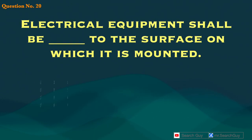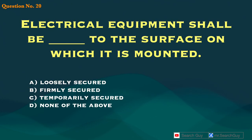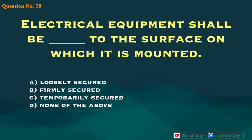Question 20. Electrical equipment shall be blank to the surface on which it is mounted. A. Loosely secured. B. Firmly secured. C. Temporarily secured. D. None of the above.